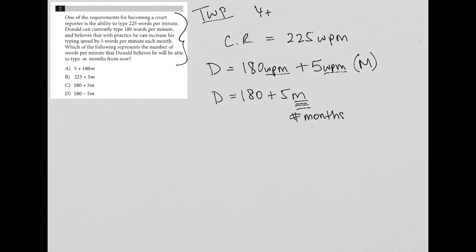The next sentence asks: which of the following represents the number of words per minute that Donald believes he will be able to type M months from now? Well, in essence, I've already answered that question through translation, which tends to happen when translating a word problem.